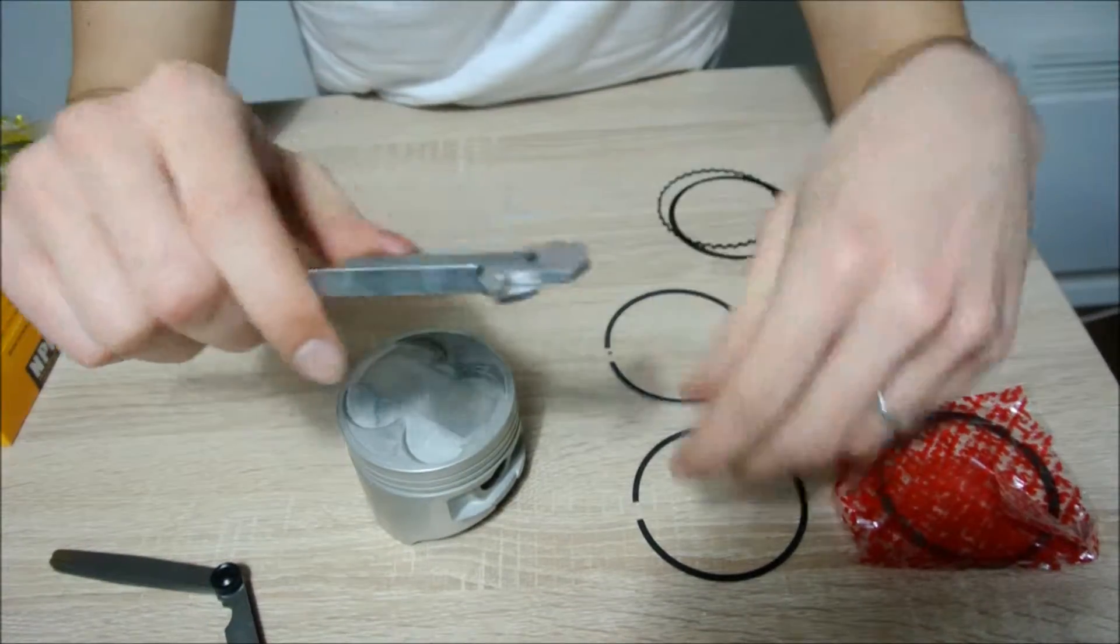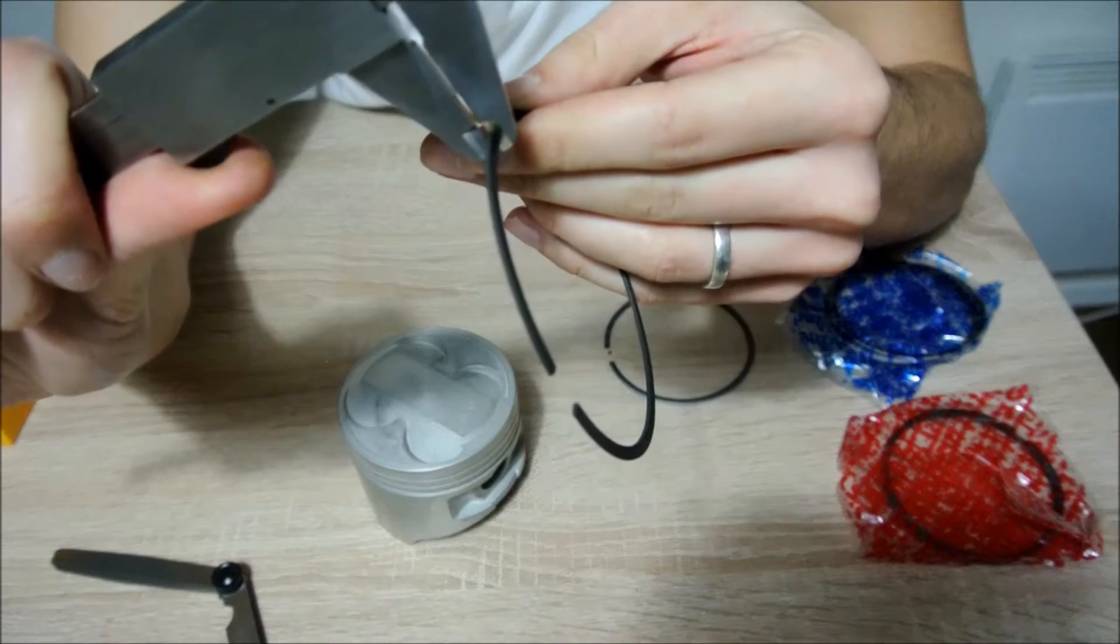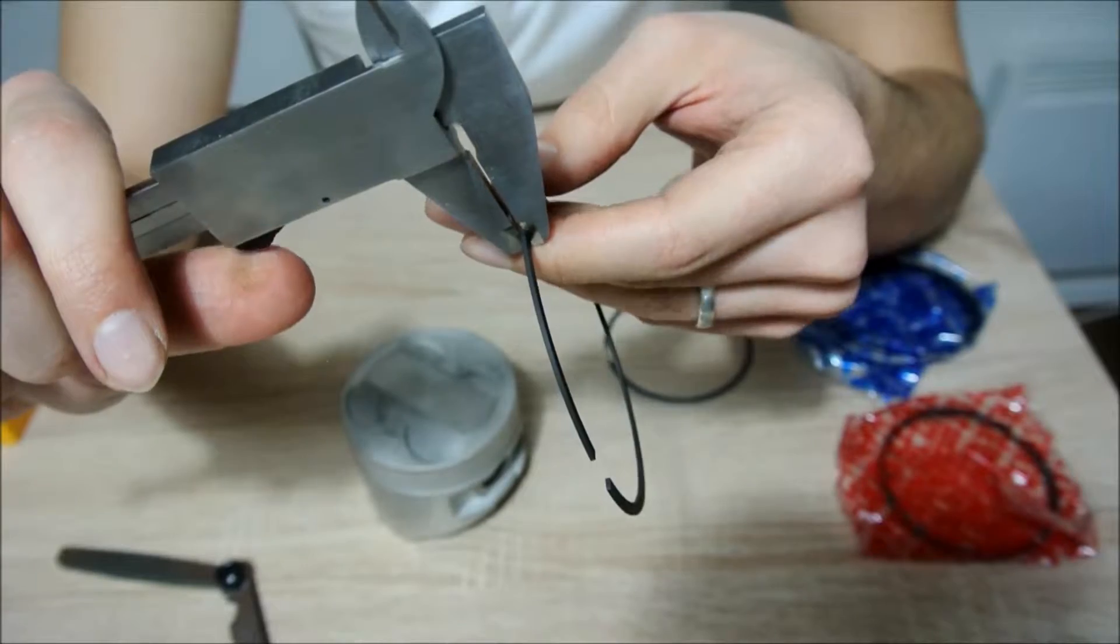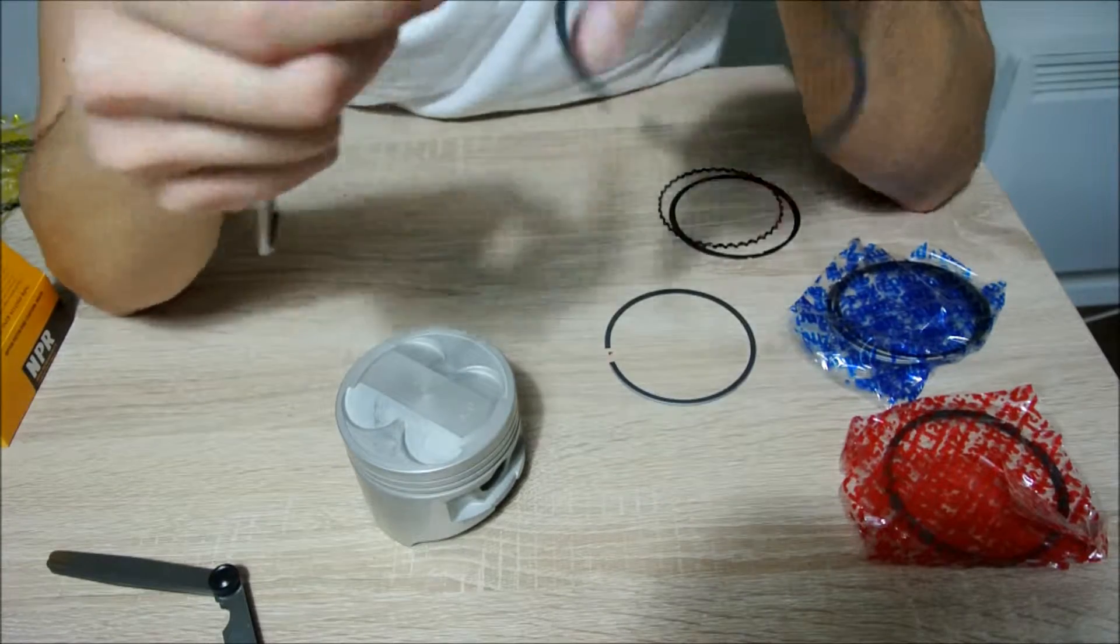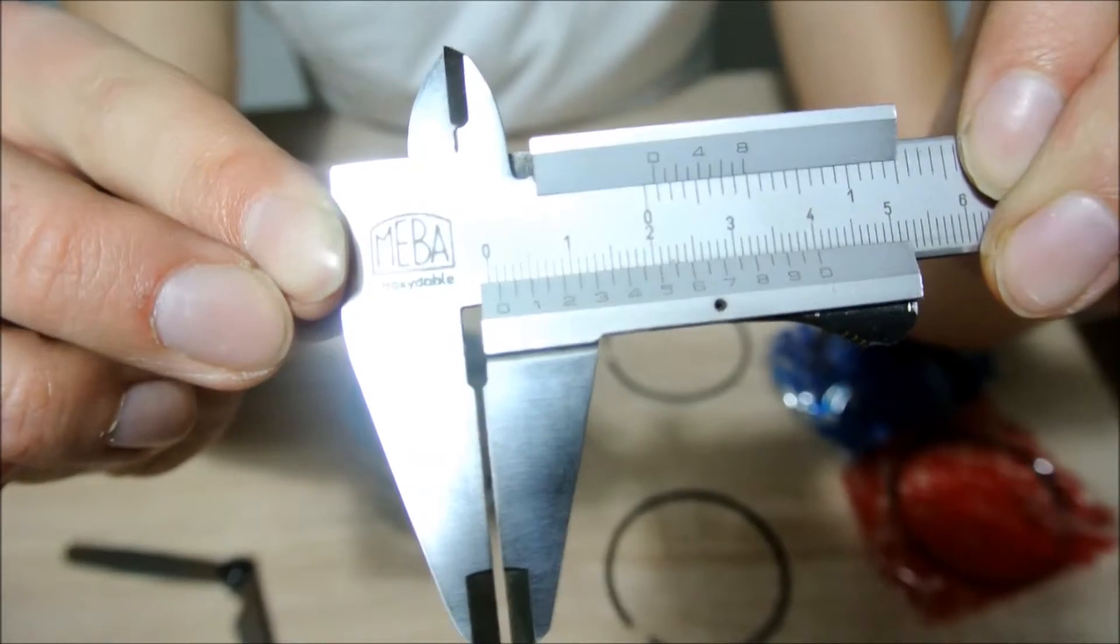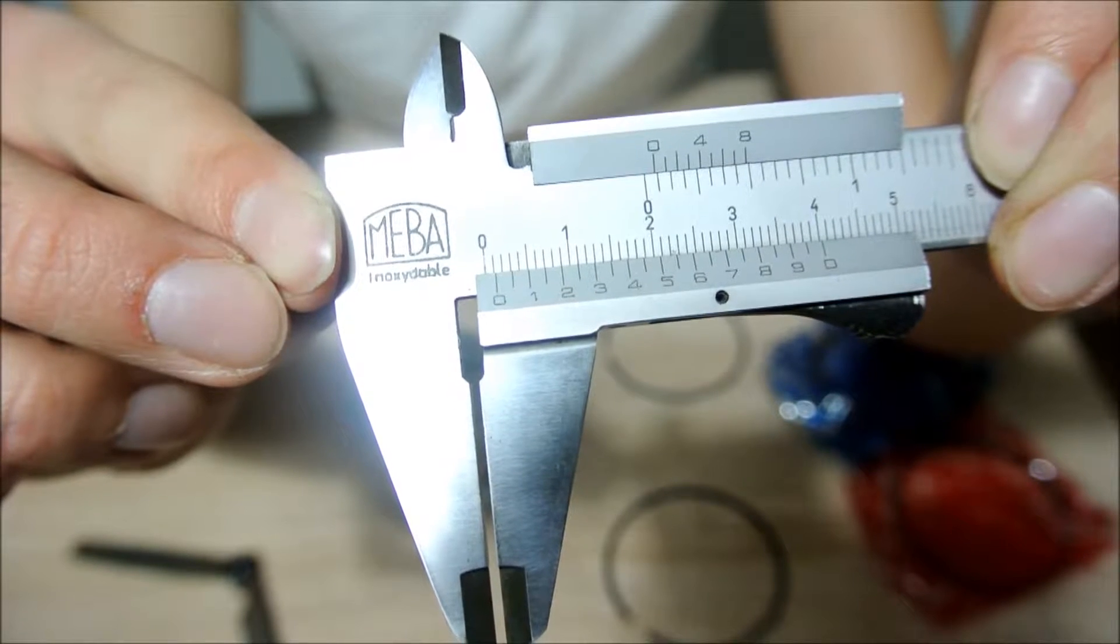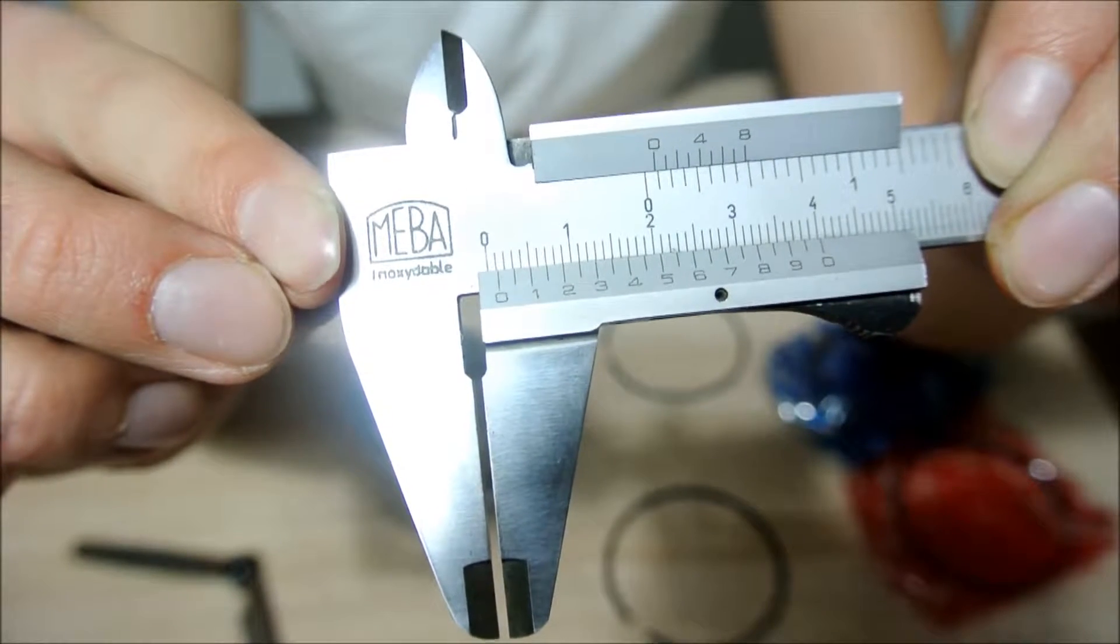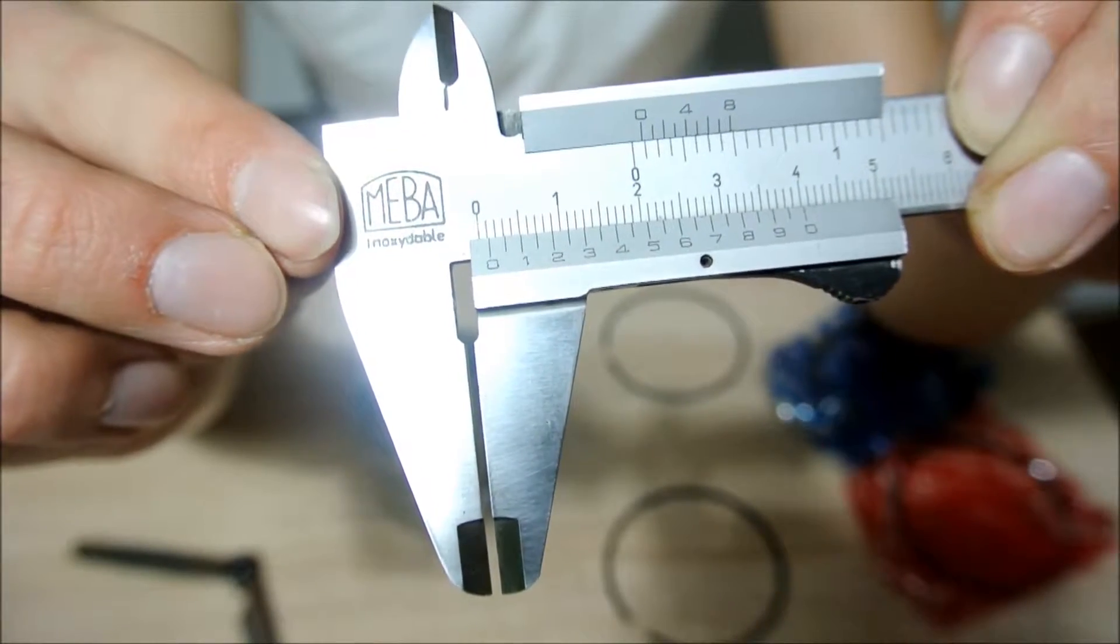Now I'm going to take the vernier caliper and measure the first piston ring. As you can see, this is exactly 1.2 millimeters on the vernier caliper. The thickness of the piston ring corresponds to the thickness of the piston ring groove in the piston itself.